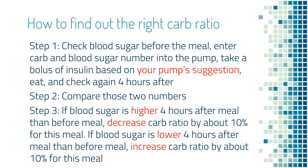If blood sugar is higher four hours after the meal than before, reduce carb ratio by about 10 percent to get more insulin. If blood sugar is lower four hours after the meal than before, you are getting too much insulin for the meal — increase carb ratio by about 10 percent to get less insulin. Let's look at a few examples to better understand this.